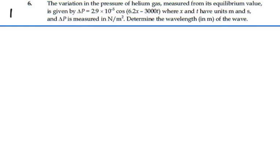Here's problem 17.6. The variation in pressure of helium gas measured from its equilibrium value is given by change in pressure equals 2.9 times 10 to the minus 5 newtons per meter squared, cosine 6.2x minus 3000t, where x and t are in units of meters and seconds. Determine the wavelength of the wave.